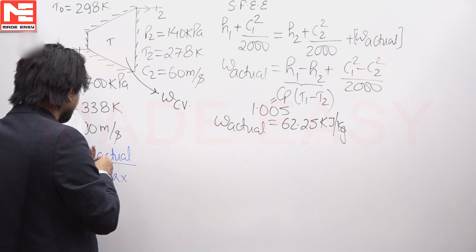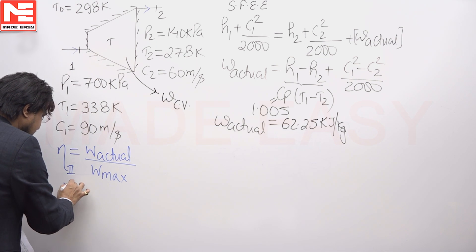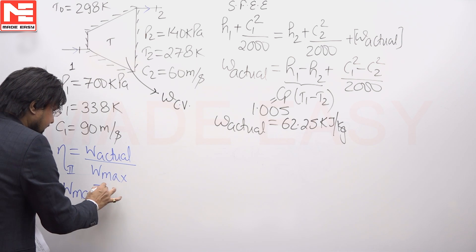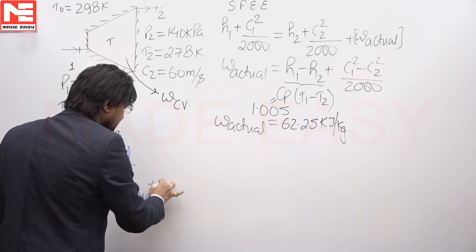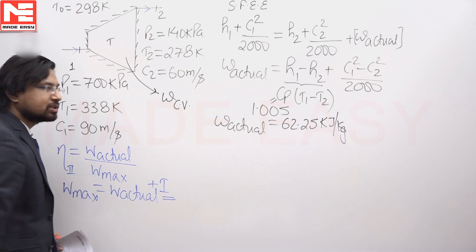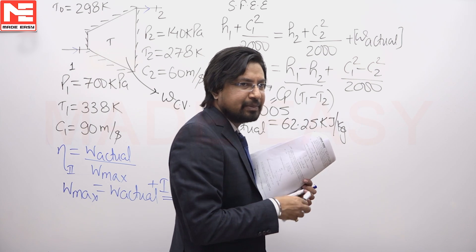I will use this relationship that the maximum possible work is equal to the actual work done in a process plus the irreversibility that has happened during the process. Let me try to find out the irreversibility which is happening.